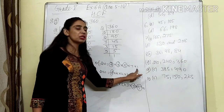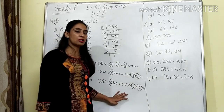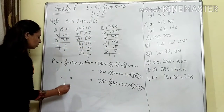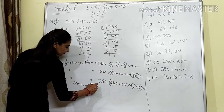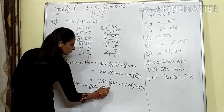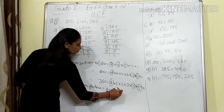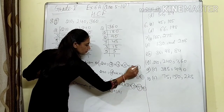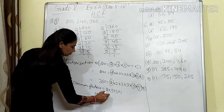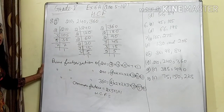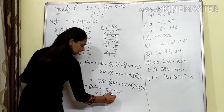We compared all numbers — if a factor does not have a pair in all numbers, we leave it. So common factors are 2 × 3 × 5 × 1. HCF is 2 × 3 = 6, and 6 × 5 = 30. So HCF of 210, 240, and 360 is 30.